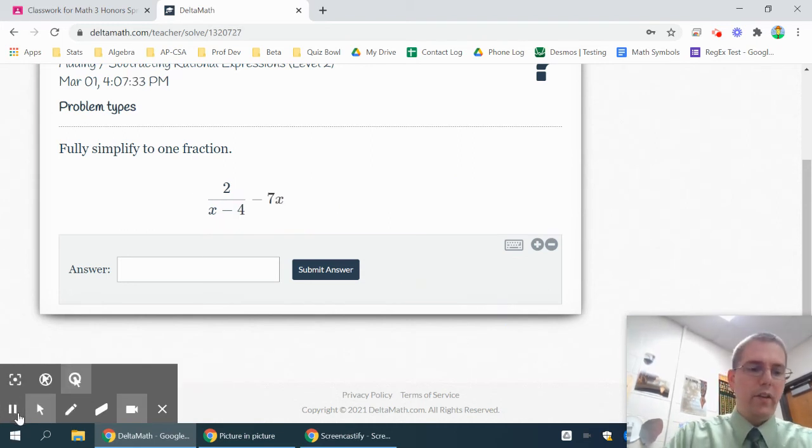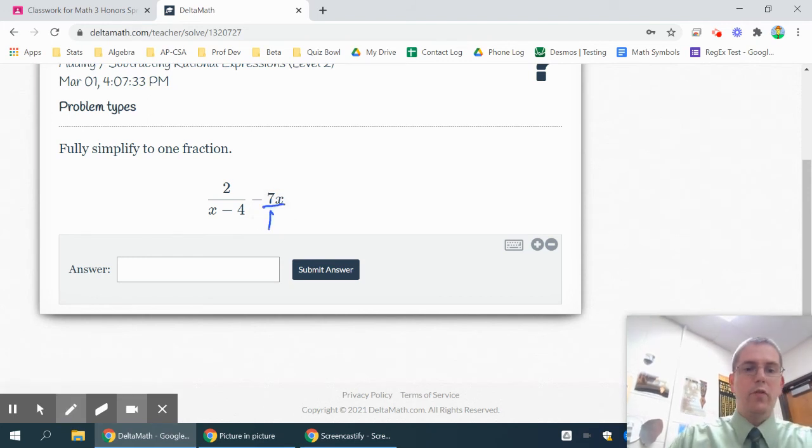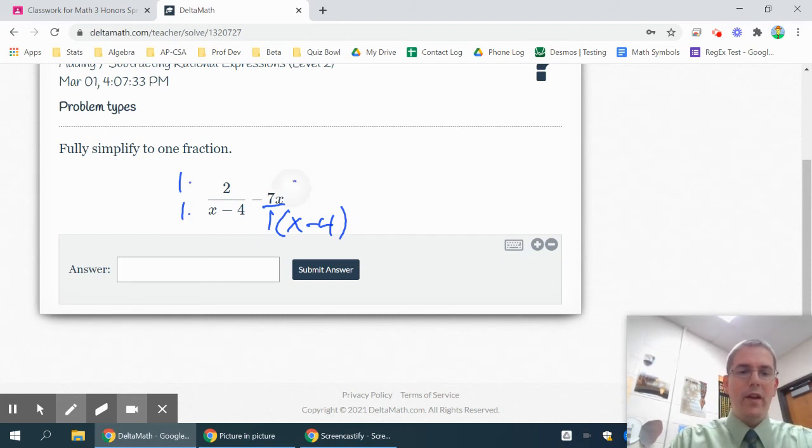Okay, this one, I only see one fraction, but remember you can write that over one. And now to make the denominator match, this just needs an x minus 4. If you want to put a 1 in the front, you can, but multiplying by 1 won't really make a difference. If you have to add an x minus 4 to the denominator, you also have to add it to the numerator.